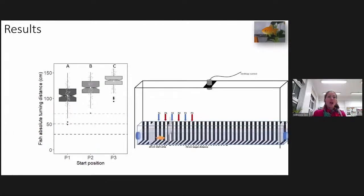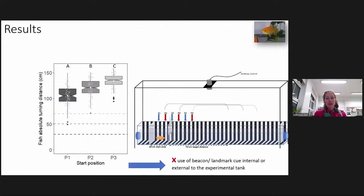We then wanted to determine if the absolute turning distance was different depending on the start position. Indeed, at the three different start positions, the fish's absolute turning distance in the experimental tank was significantly different. This is very important as it indicates that the fish were not using any beacon or landmark cue — internal or external to the experimental tank — to know where to turn.